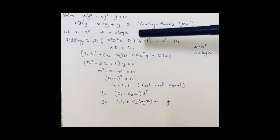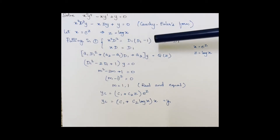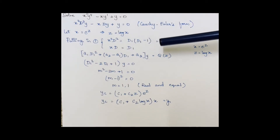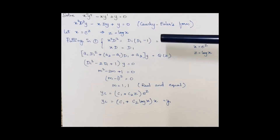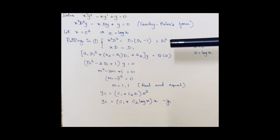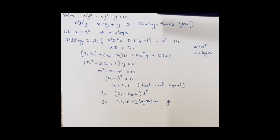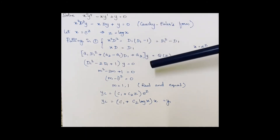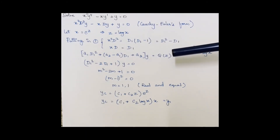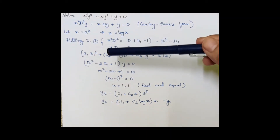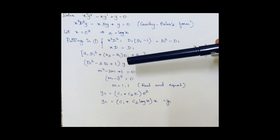Now, x²D² = D1(D1 - 1) = D1² - D1, and xD = D1, as established earlier. Substituting all these into the equation, we obtain (D1² - 2D1 + 1)·y = 0.